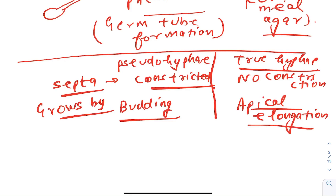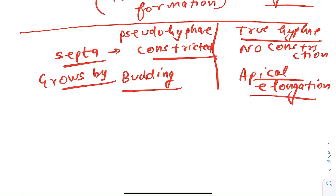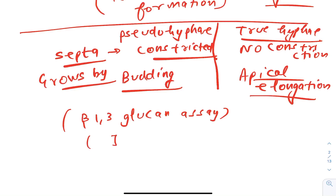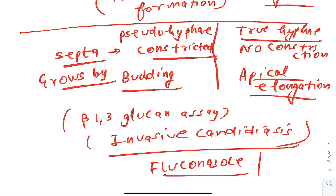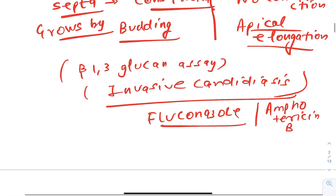Another frequently asked topic is beta-1,3-glucan assay. This is present in Candida cell walls and is used for diagnosing invasive candidiasis. The drug of choice for Candida is fluconazole. For invasive candidiasis, amphotericin B can be used.